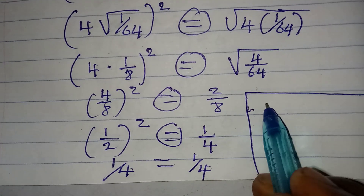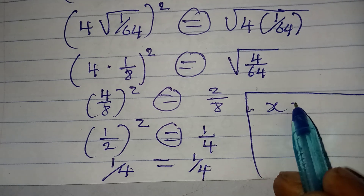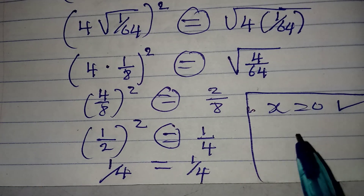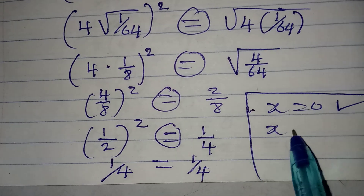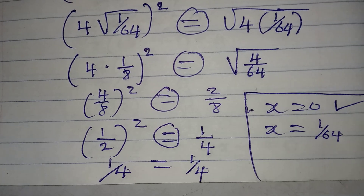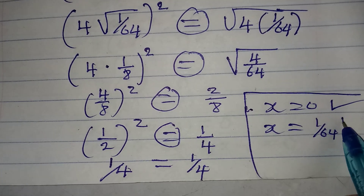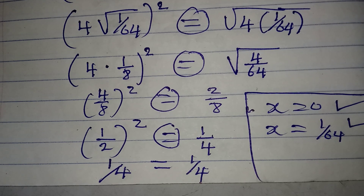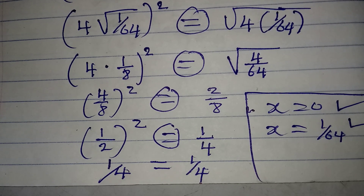The two solutions are x equals 0 and x equals 1 over 64, and both satisfy the given equation. Thank you for watching.